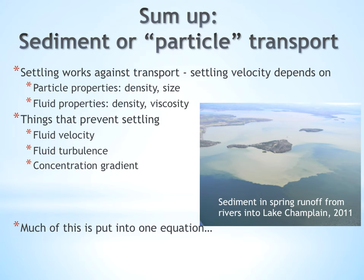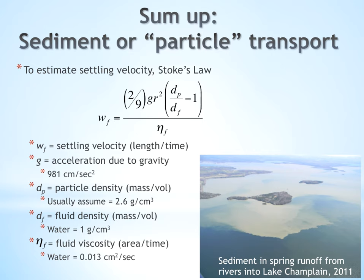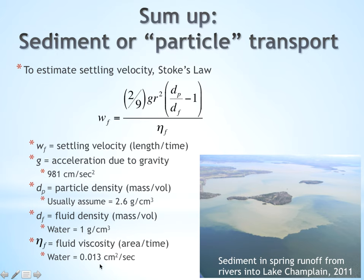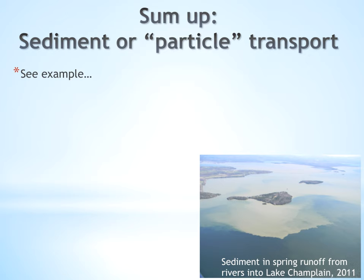All of these ideas are captured in one equation: Stokes' Law, which we use to estimate settling velocity. WF is settling velocity in length over time. G is acceleration due to gravity, a constant. DP is particle density in mass per volume, typically assumed to be 2.6 grams per cubic centimeter. DF is fluid density of water, which is 1 gram per cubic centimeter. The denominator includes fluid viscosity, for which we use 0.013 square centimeters per second for water. Many of these are constants you can plug in directly, and there will be an example in the pre-lecture.